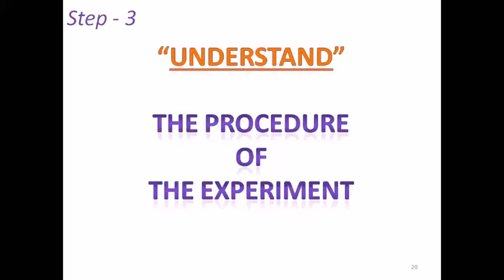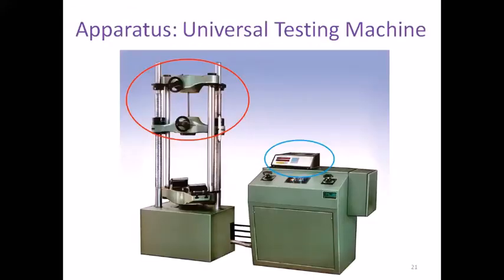Now, third step: the procedure of the experiment. This is a universal testing machine, also called UTM. The specimen has basically two components or two parts. The left part is called loading unit and right part is called control unit. The specimen is to be placed on left hand side in the upper region as well as in lower region, and it is operated by right hand side. On the left hand side, on loading unit, we have three basic components: upper cross head, middle cross head and lower cross head.